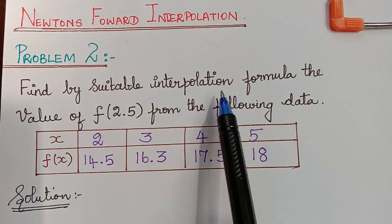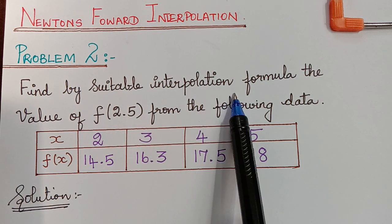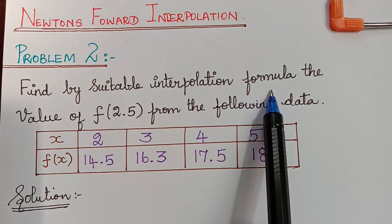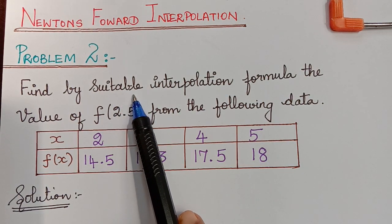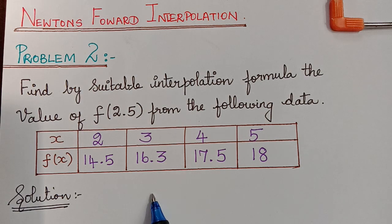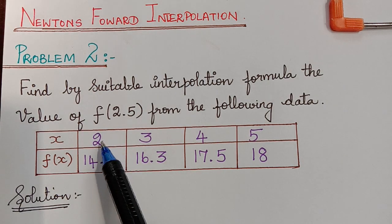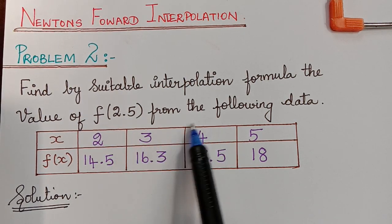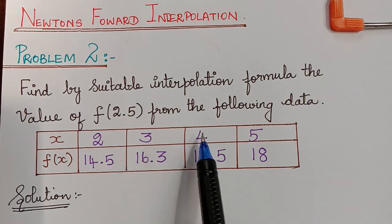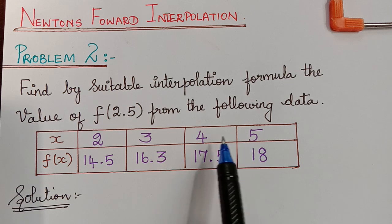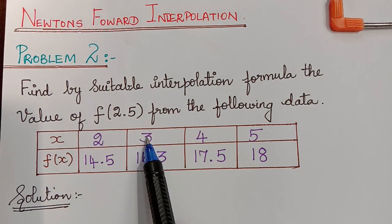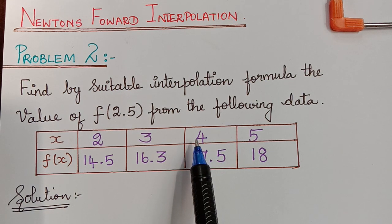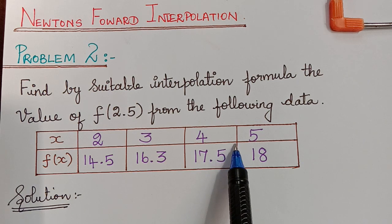In this question, it is not mentioned what formula we have to use. Instead, they are asking us to find it by using a suitable interpolation formula, for which we first have to identify what formula to use. The values of x are placed in equidistant intervals — 3 minus 2 is 1, 4 minus 3 is 1, 5 minus 4 is also 1 — so they are in equal intervals, which implies we have to use either Newton's forward or Newton's backward interpolation formula.